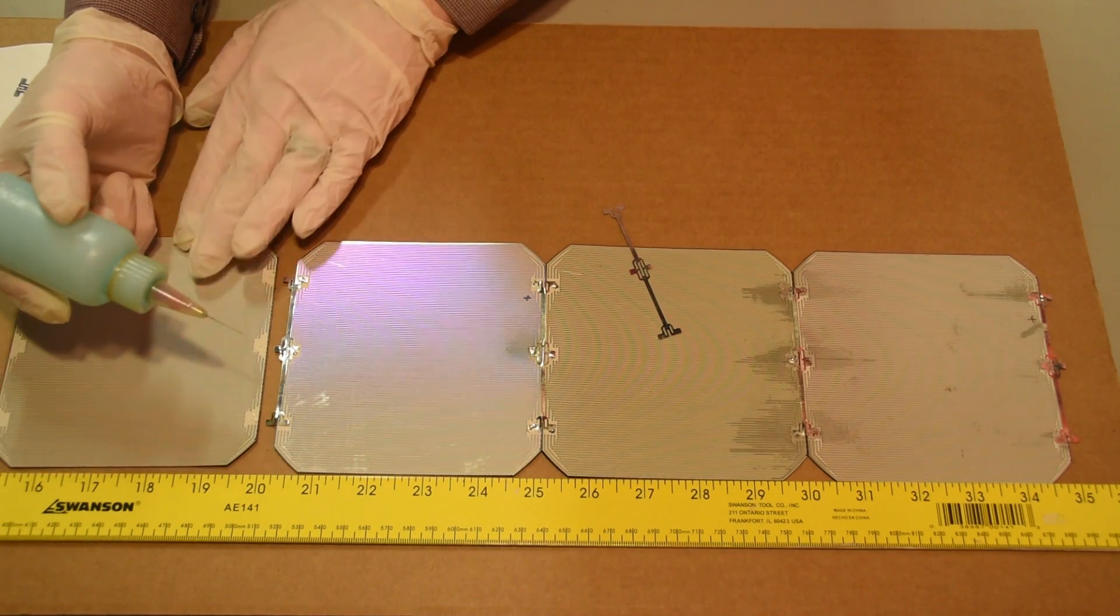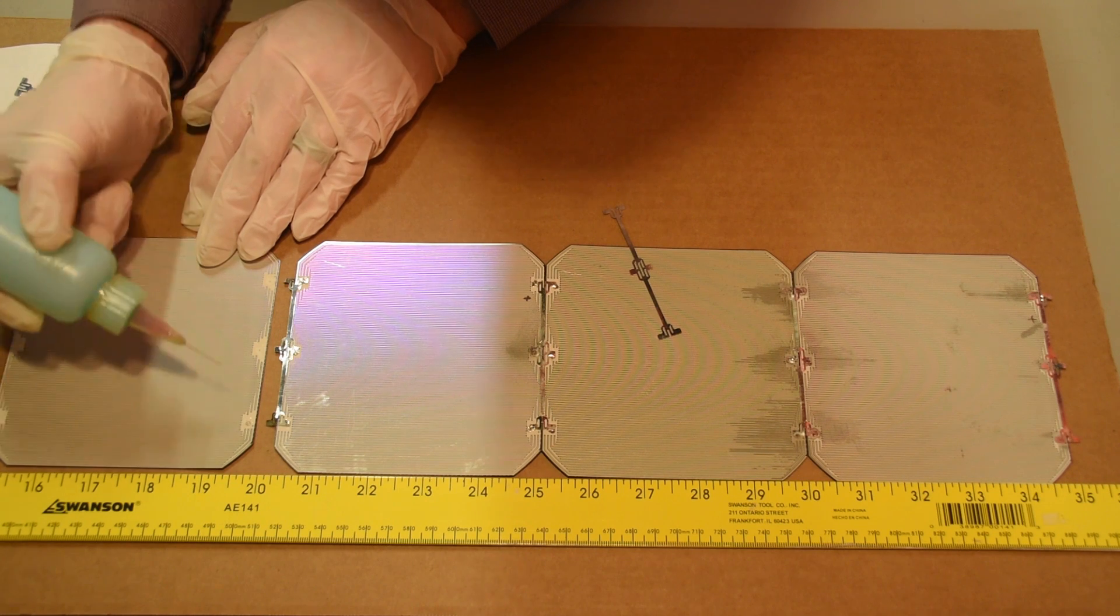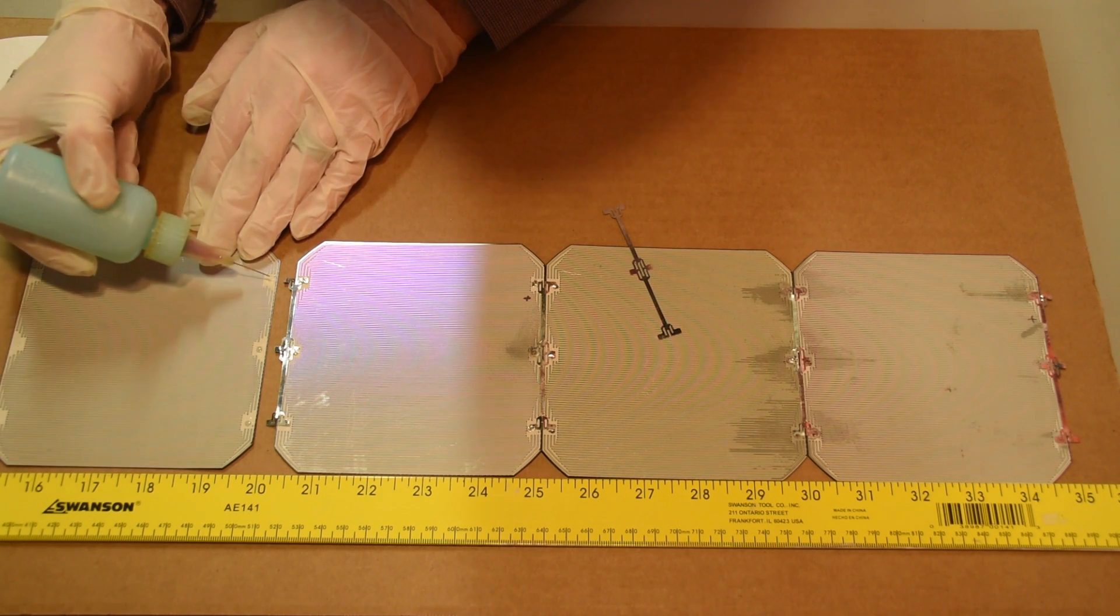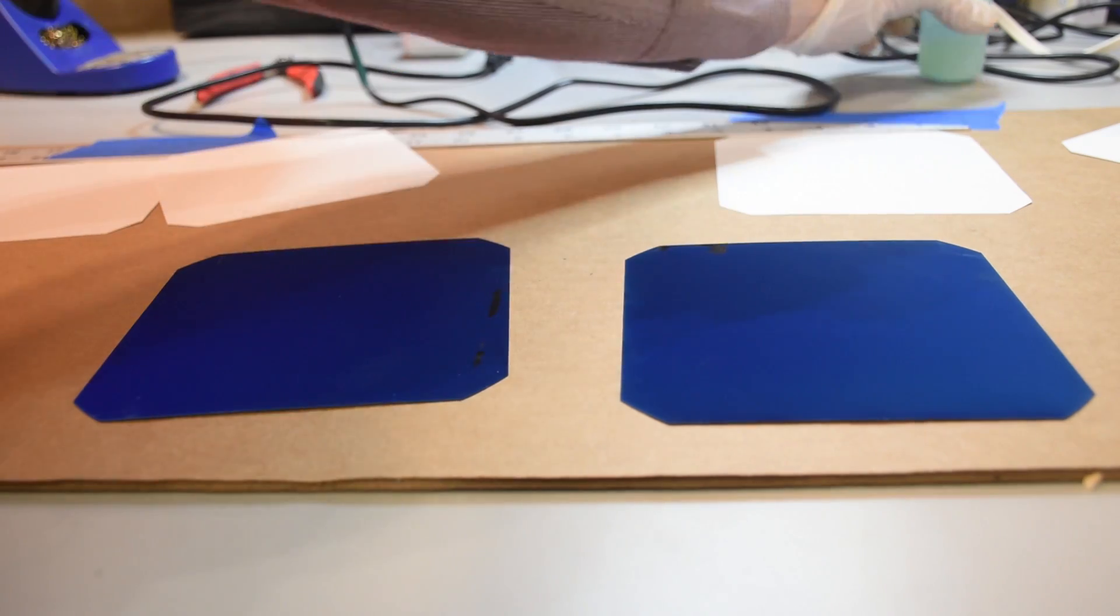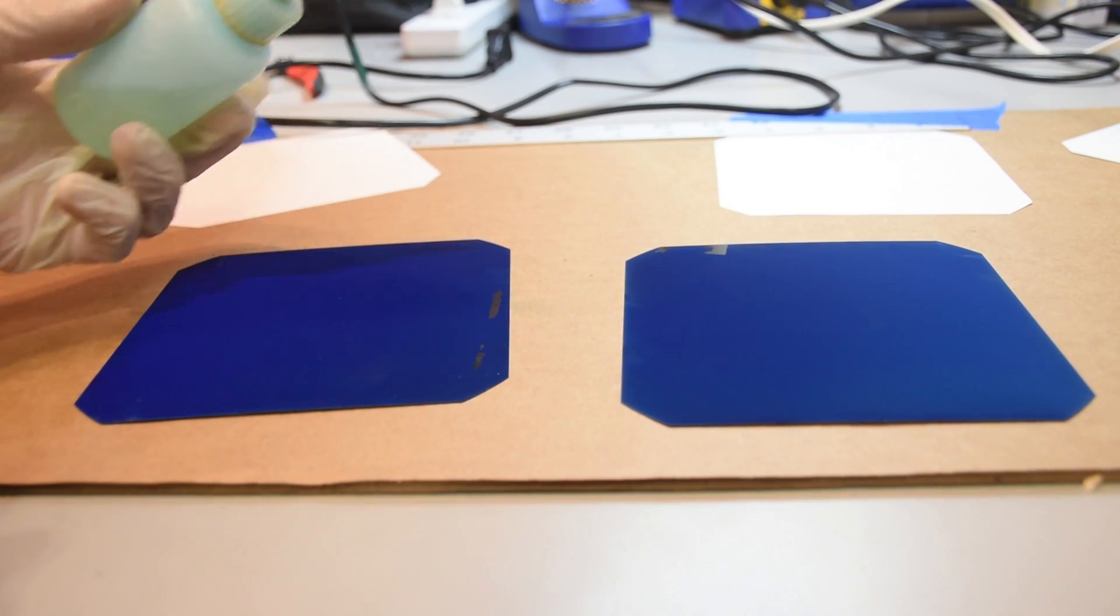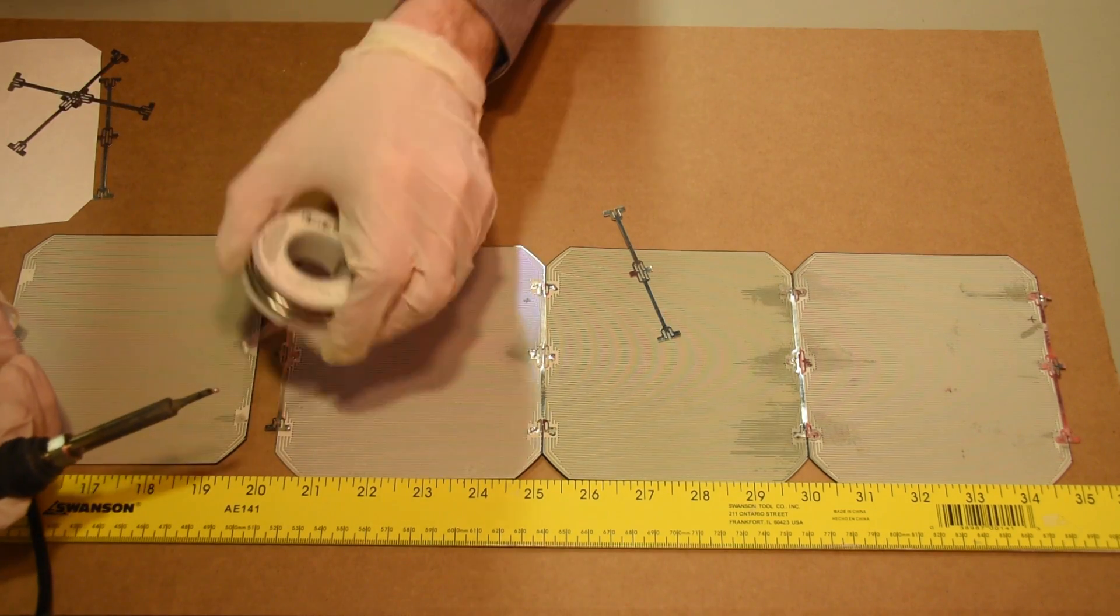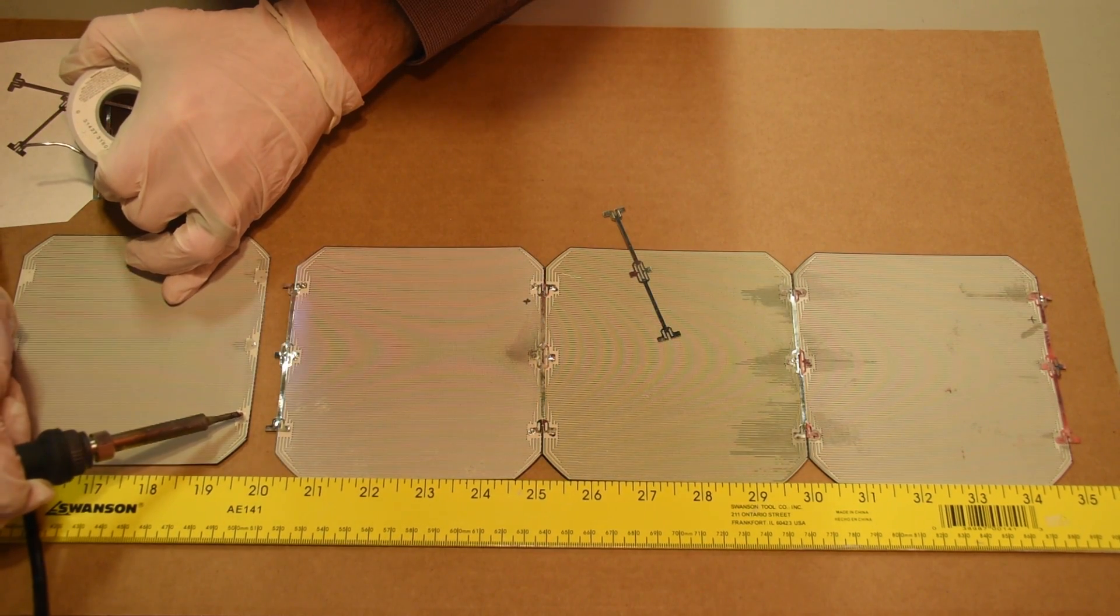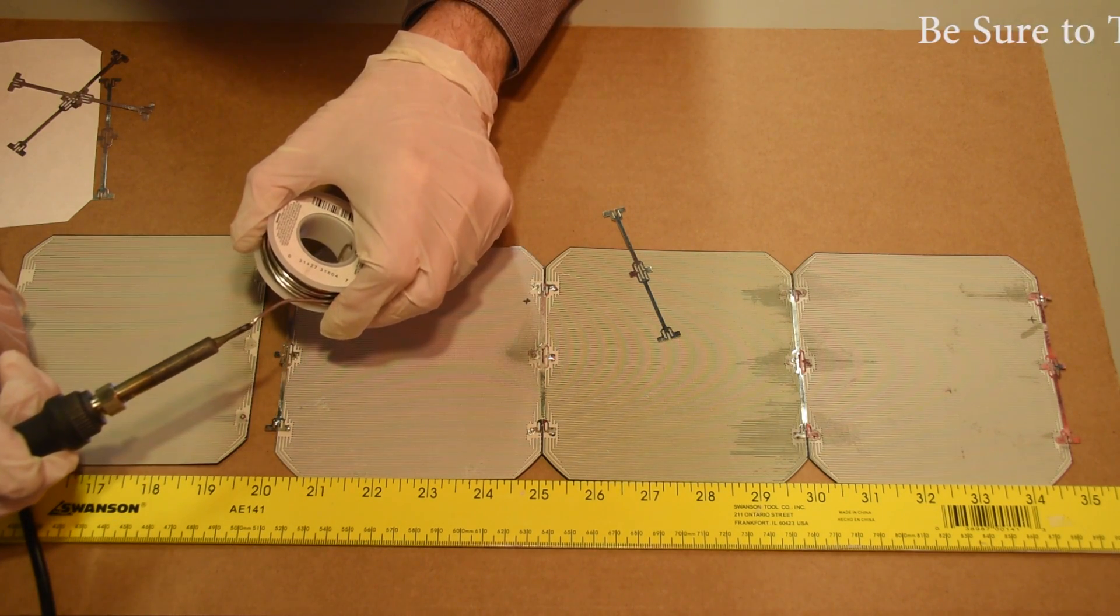I'm going to put the tiniest drop of flux right here on each of these three little dots. Make sure not to get the flux on the front because it looks like this. This is why the paste is sometimes better than the liquid. I'm going to put a tiny bit of solder on the end of my soldering iron and I'm going to drop it right here on this little dot inside the white zone. I'm going to do that three times.